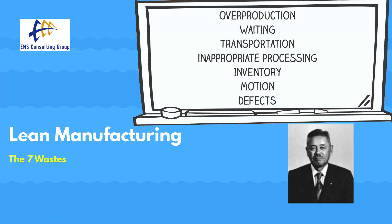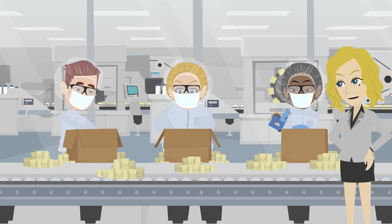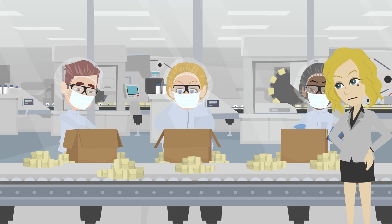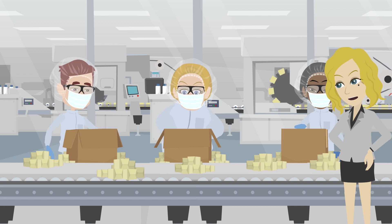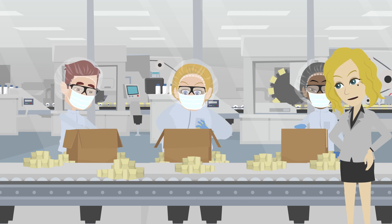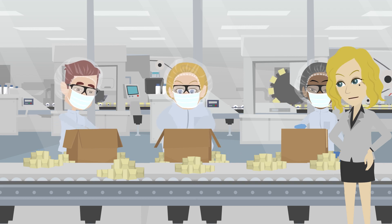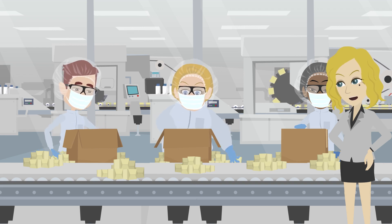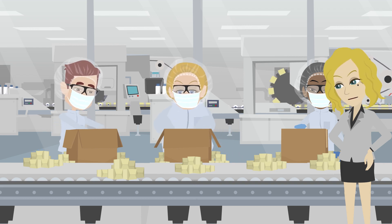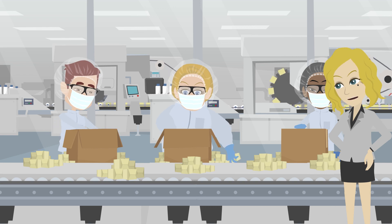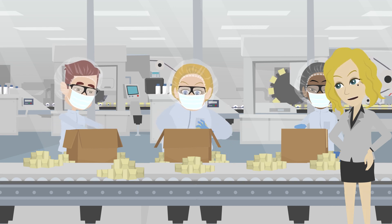Let's begin with overproduction. Overproduction is producing more material or information than the next downstream customer requires. Ohno considered overproduction to be the chief waste, since it amplifies many of the other wastes.